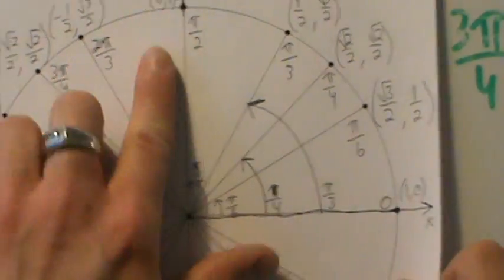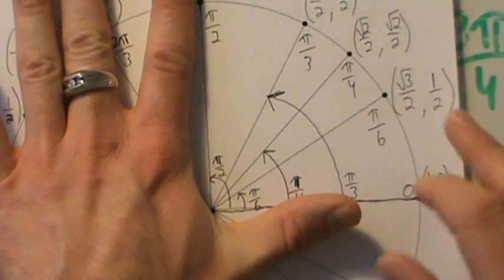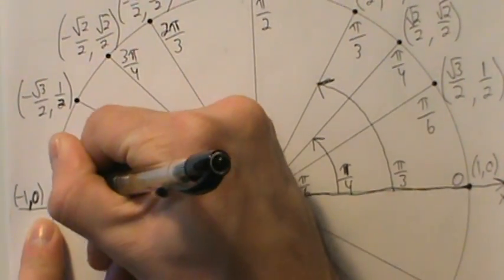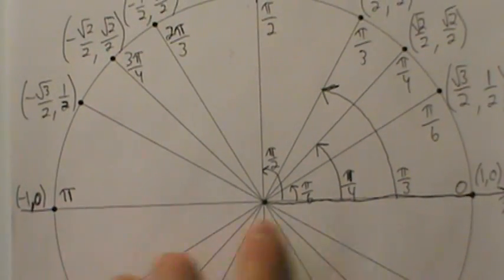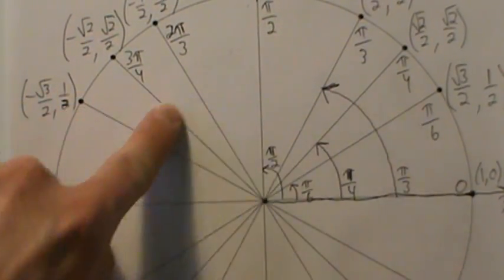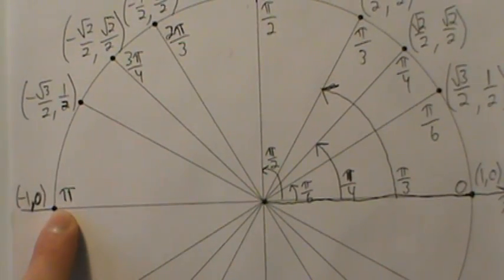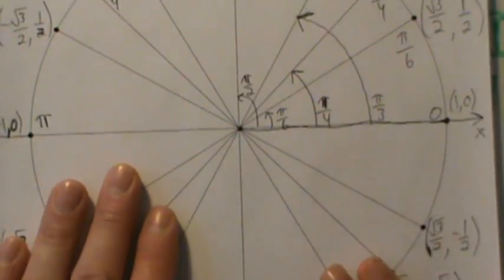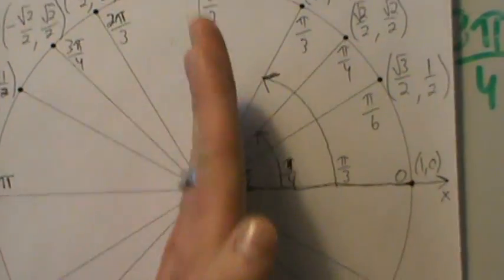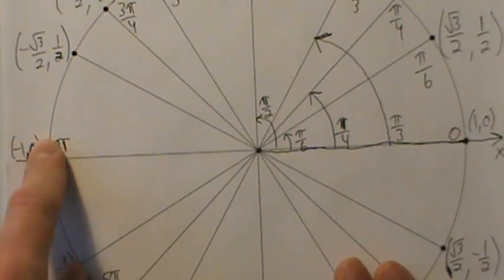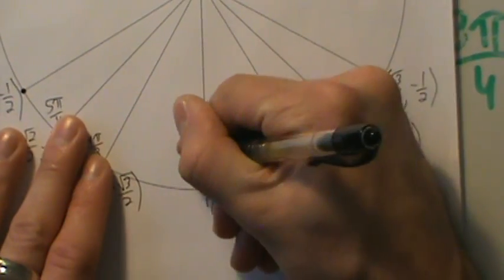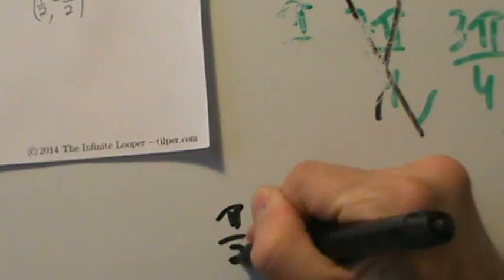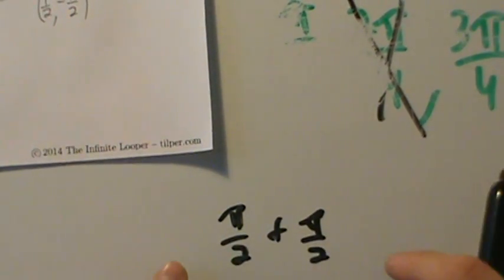What about the angles on the axes? This angle here is pi. Pi radians equals 180 degrees — a straight line from the initial position. Or think of it as pi over 2 plus pi over 2 equals 2 pi over 2, which is pi. The bottom of the circle: add one more pi over 2 to get 3 pi over 2. So the axes angles are 0, pi over 2, pi, 3 pi over 2, and 2 pi.